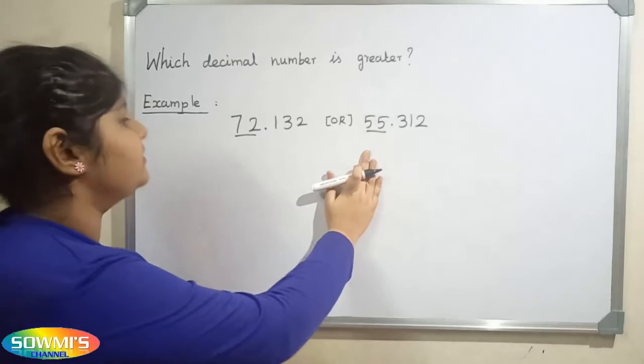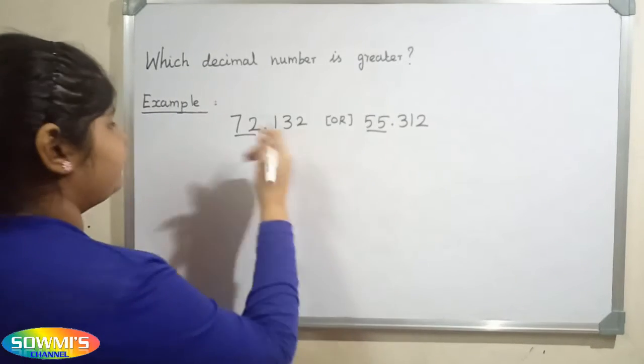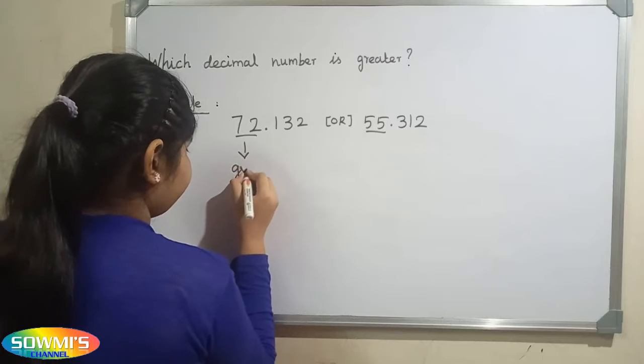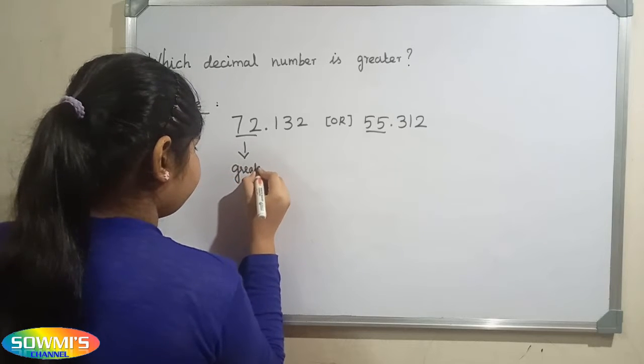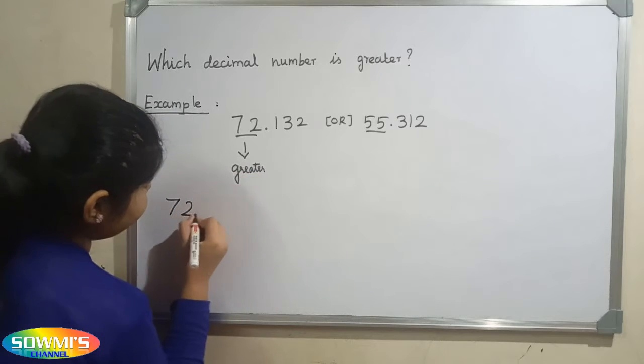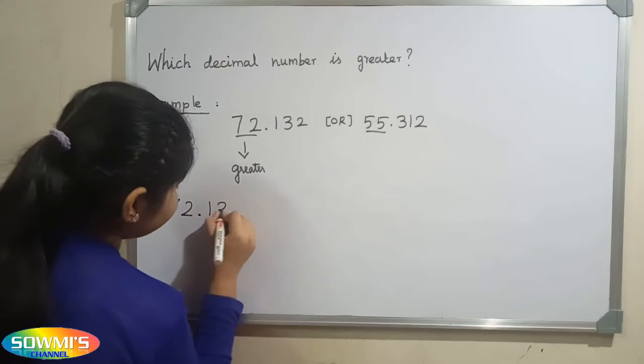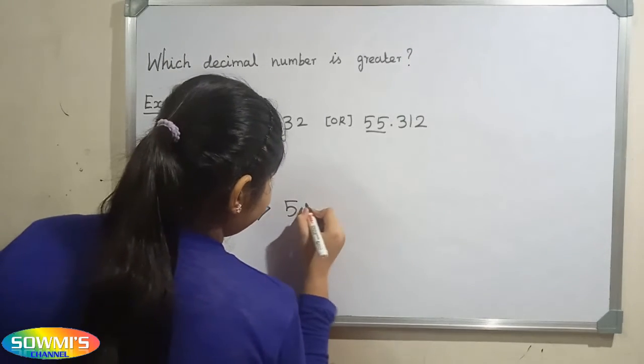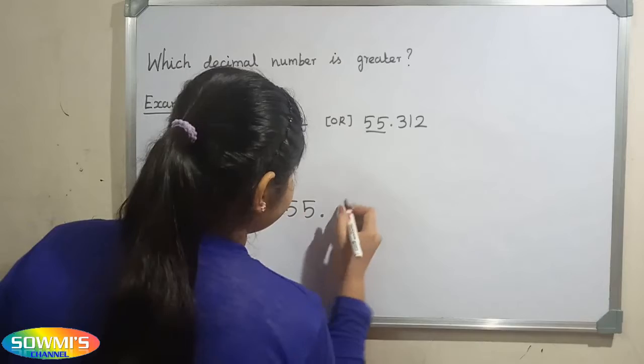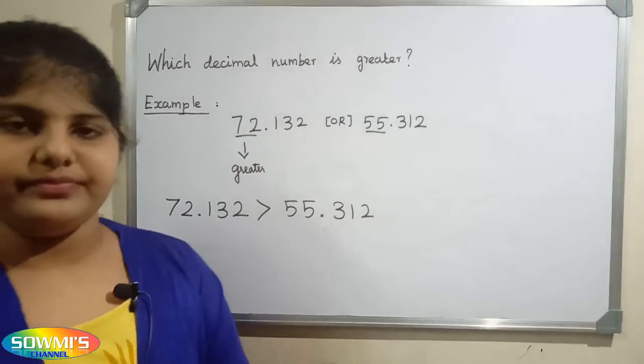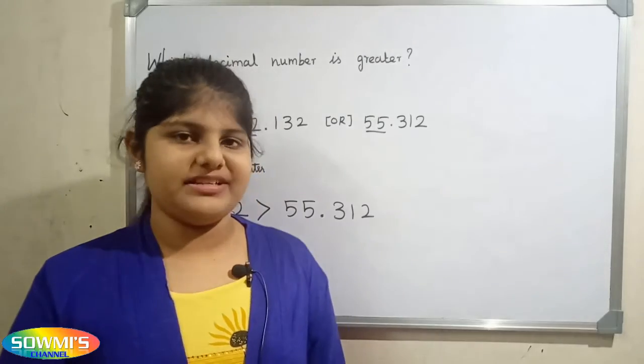So now we have to compare the whole number part. Here 72 is greater, so 72.132 is greater than 55.312. Let us take one more example.